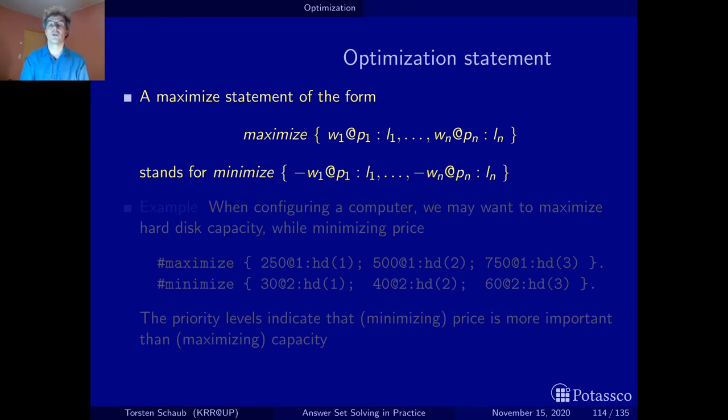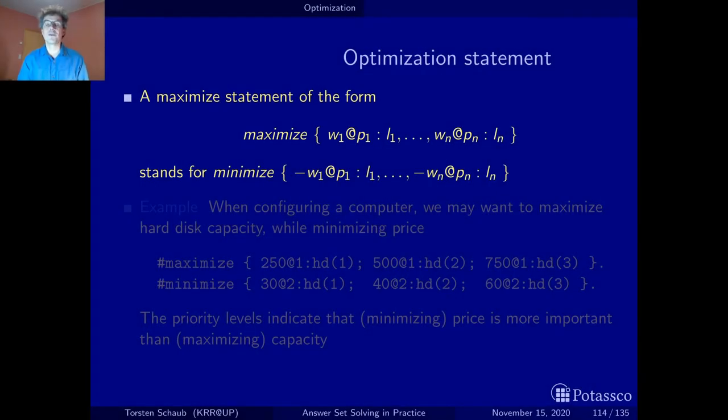Now let's look at a small example, configuration, and in particular computer configuration is a cool example to illustrate the strength of ASP. Think of it, it's all about choices right, which monitor to choose, which keyboard to choose, which boards to choose and so on. And then of course we have the choice rules or cardinality constraint that we can use to describe this.